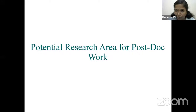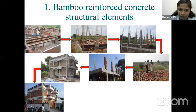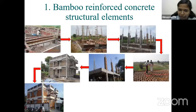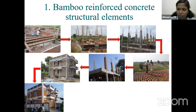Moving to potential post-doctoral research areas: a bamboo reinforced concrete framed building structure can be constructed using bamboo as longitudinal bars in beams and columns, and bamboo reinforcement in slabs and roof slabs for each floor. However, the stirrups in beams and ties in columns are still made of steel, so such a structure cannot yet be considered fully sustainable.